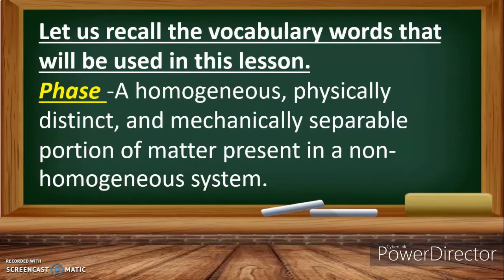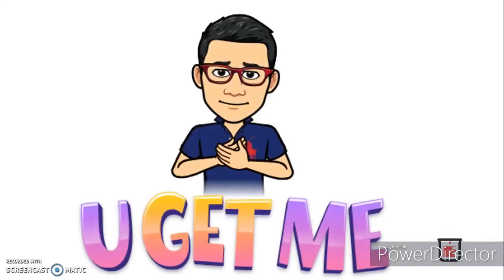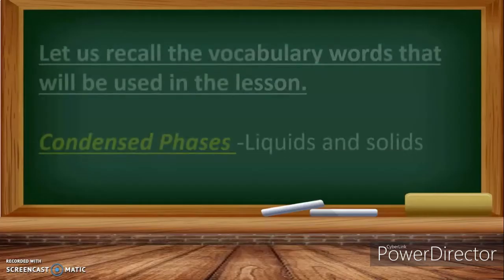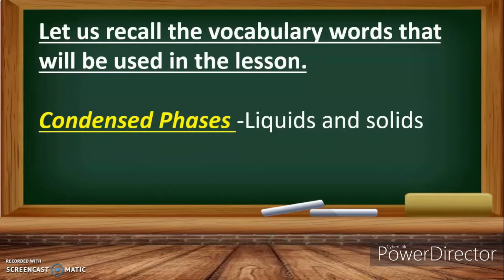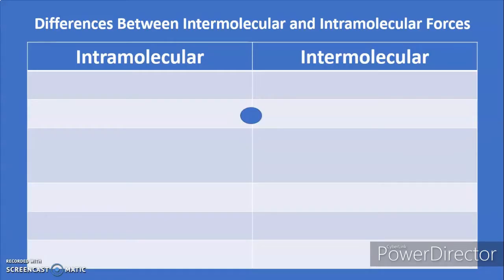Let us recall the vocabulary words that will be used in this lesson. A phase is the homogeneous, physically distinct, and mechanically separable portion of matter present in a non-homogeneous system. Condensed phases include liquids and solids.